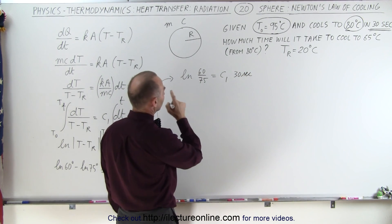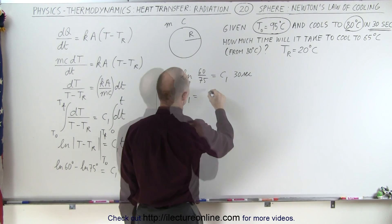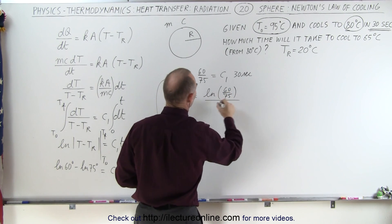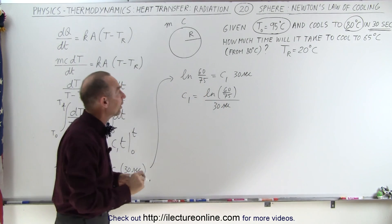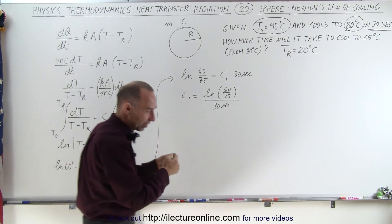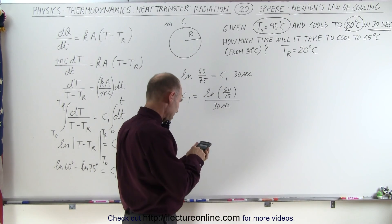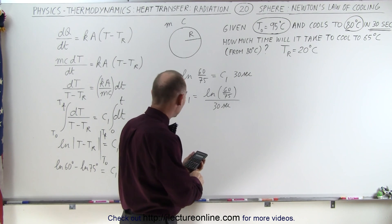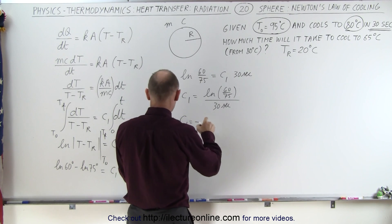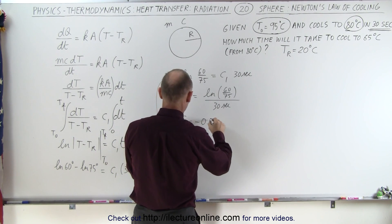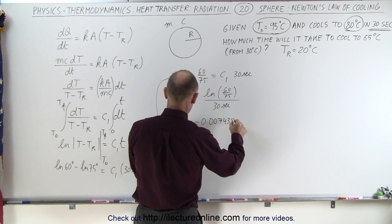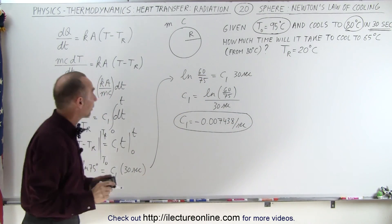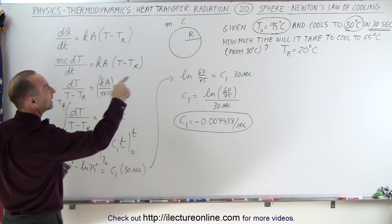That means C1 is equal to the natural log of 60 divided by 75, all divided by 30 seconds. Now we have a value for C1: C1 equals negative 0.00748 per second. Now we have a value for our constant and can plug it back into our equation to solve the next stage.